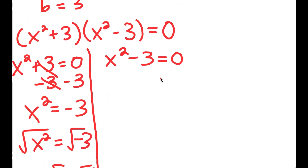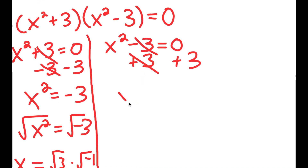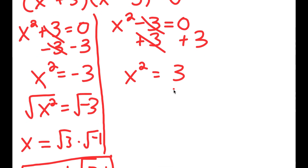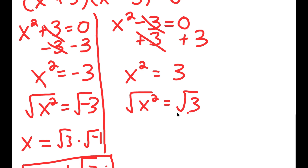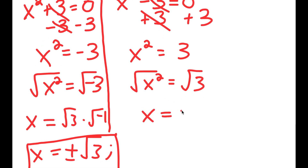For x squared minus 3 equals 0, this is much simpler. All I have to do is add 3 on both sides, and I get x squared is equal to 3. If I take the square root on both sides, the square root of x squared is x, so I get x is equal to positive or negative square root of 3.